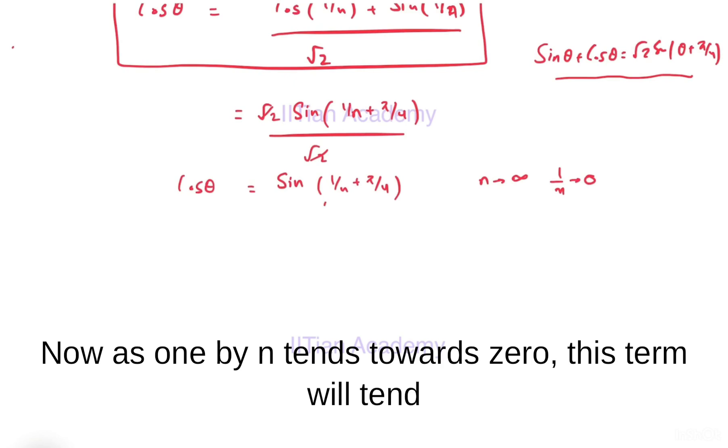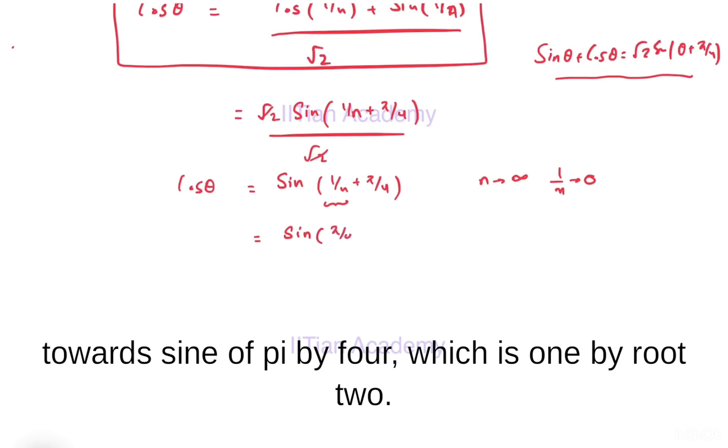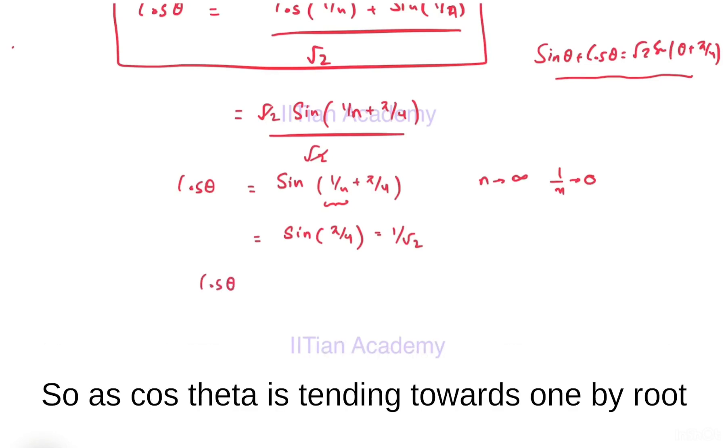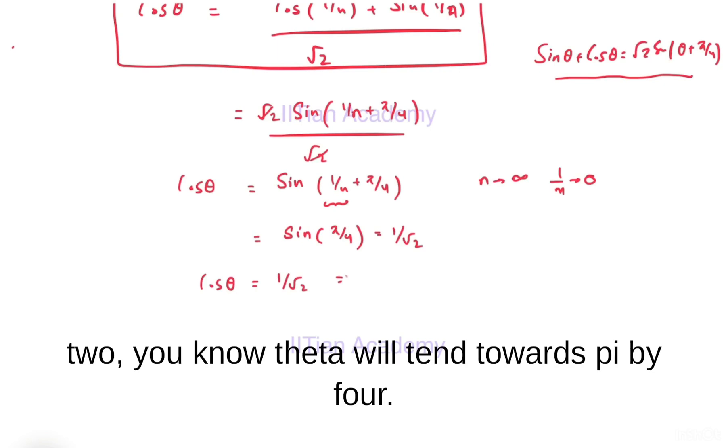Now as 1/n tends towards 0, this term will tend towards sin(π/4), which is 1/√2. So as cos θ is tending towards 1/√2, theta will tend towards π/4.